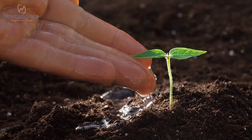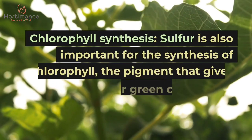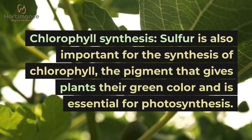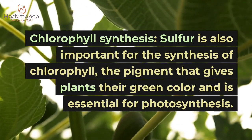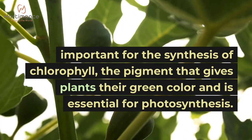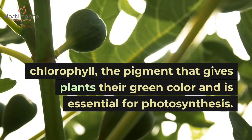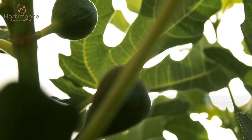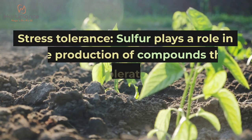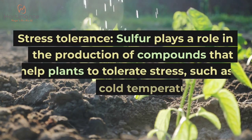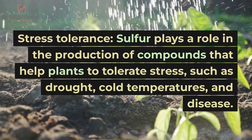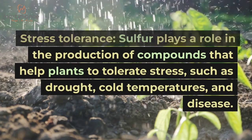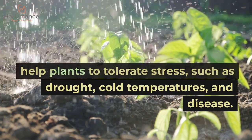Chlorophyll synthesis is another key function. Sulfur is important for the synthesis of chlorophyll, the pigment that gives plants their green color and is essential for photosynthesis. Sulfur also plays a role in stress tolerance, contributing to the production of compounds that help plants tolerate stress such as drought, cold temperatures, and disease.